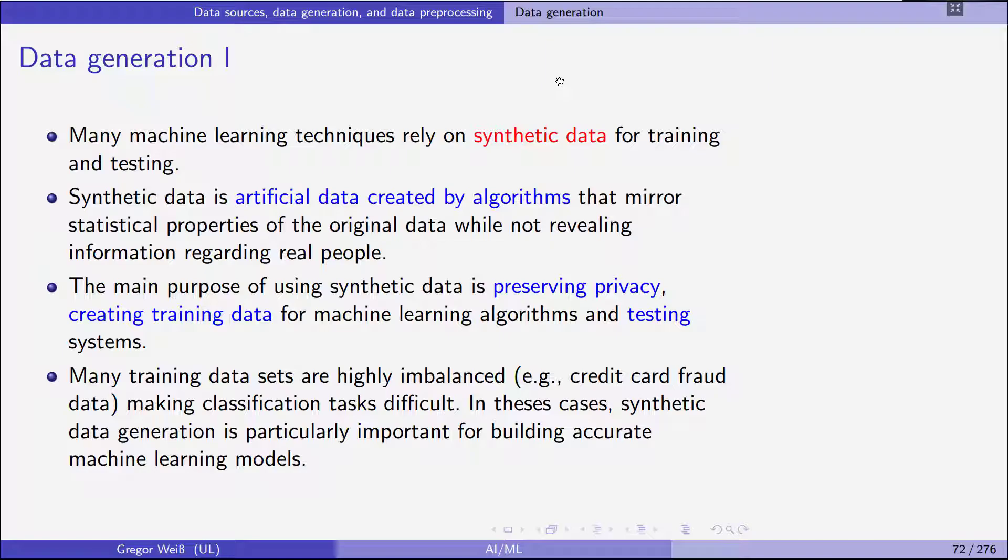So synthetic data is artificial data, usually created by algorithms sampled via simulations, that should mirror statistical properties of the original data as good as possible, while not revealing information on real people. So we want to preserve privacy, we want to create training data for our algorithms, and we want to test our systems. This is why we need to generate data.